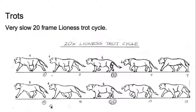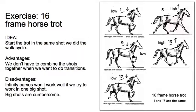Here's a slow trot cycle using a lioness. This is taken from The Lion King and this is the one we're going to do. Here's a 16 frame trot cycle with a horse.